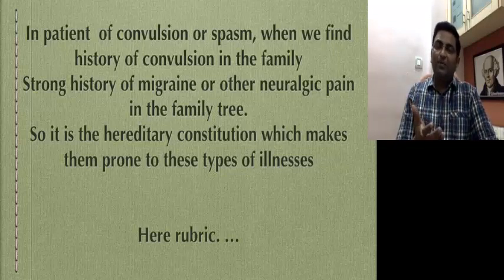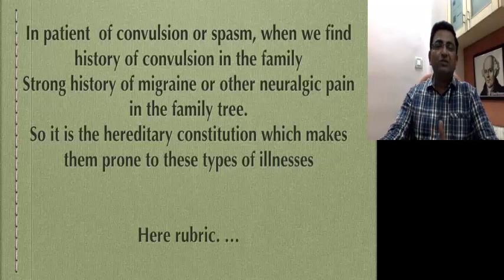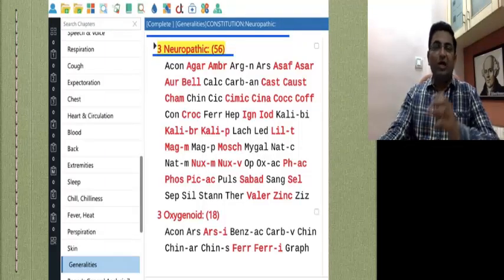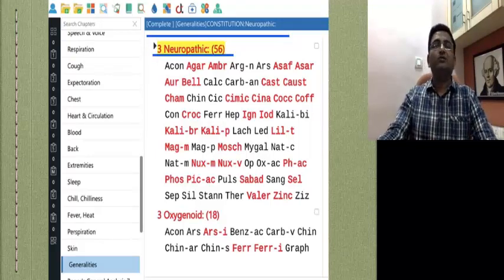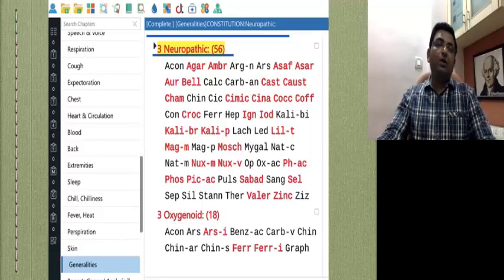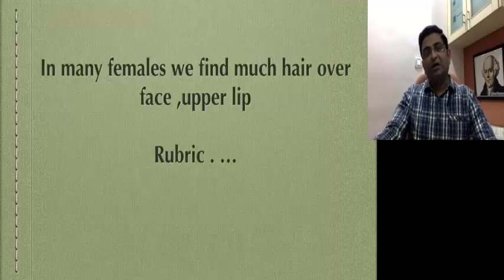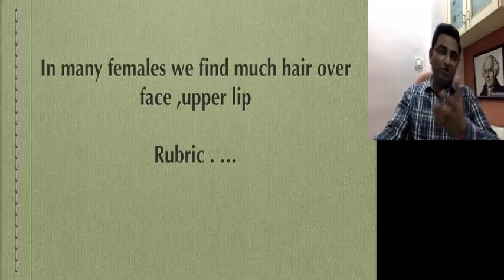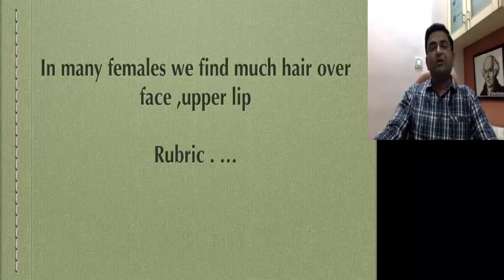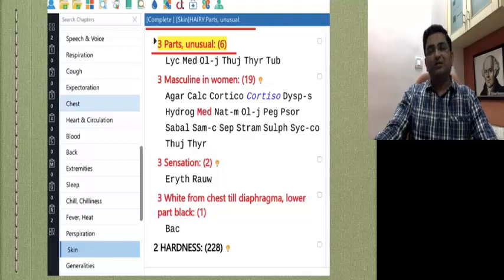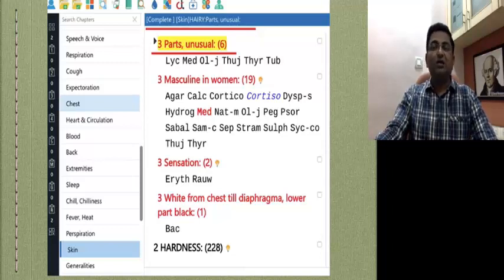But when you go to the past history or the family history, you find more than five or six members of the family suffering from the same disease or the same neurological conditions. So there is a very interesting rubric in General: Constitution — neuropathic. You can consider this rubric when you find a strong family history of this type of neurological disease. In many females, we find much hair over the face and upper lip. This is an observational rubric — you observe the patient and you get the medicine. The rubric is: Hair on unusual parts. The same thing you find in females with thick hair growth over extremities, like that of males. So the rubric is: Hair — parts — unusual — in masculine women. Strong constitution.